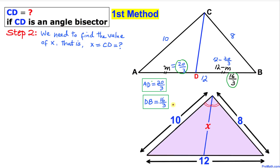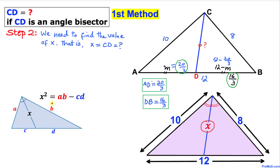Now we need to find the value of x, which is segment CD. We will use the theorem x² equals A times B minus C times D, where x is the angle bisector length. In our case A is 10, B is 8, C is 20 over 3, D is 16 over 3, and segment CD is our x.